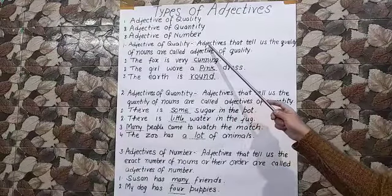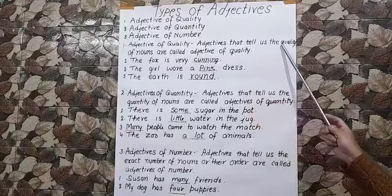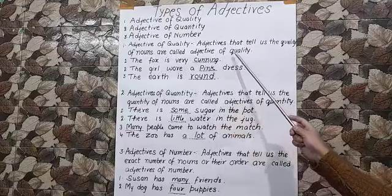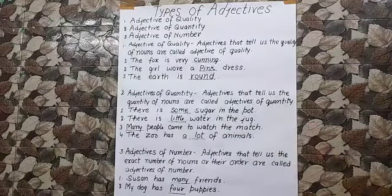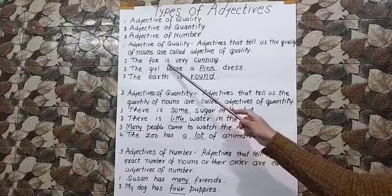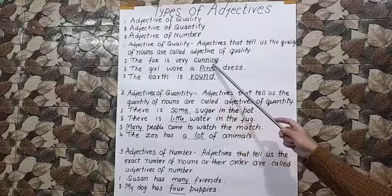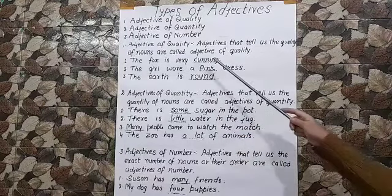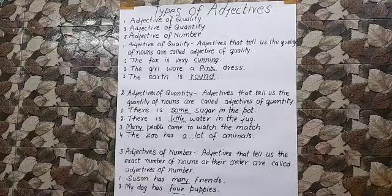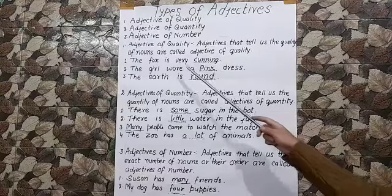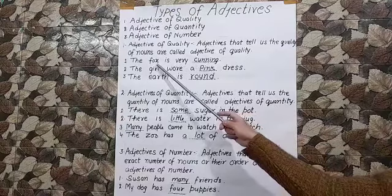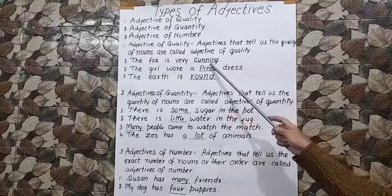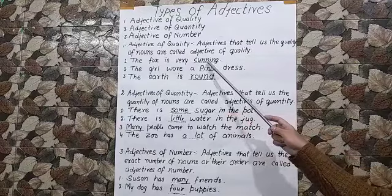Adjectives that tell us the quality of nouns are called adjectives of quality. Children, let us see some examples. The fox is very cunning. Now what kind of fox? Cunning fox. Cunning tells us about the noun fox, so cunning is an adjective of quality in this sentence.